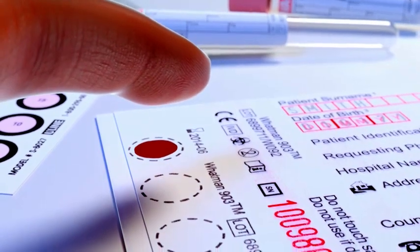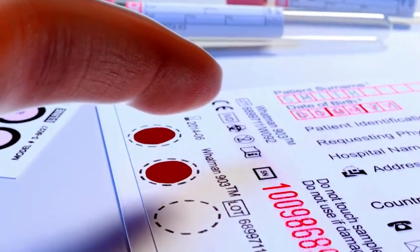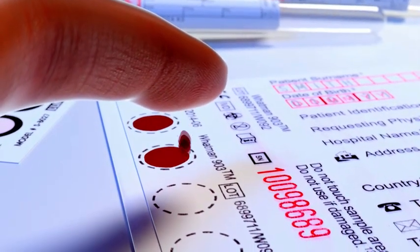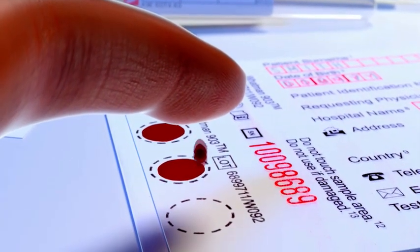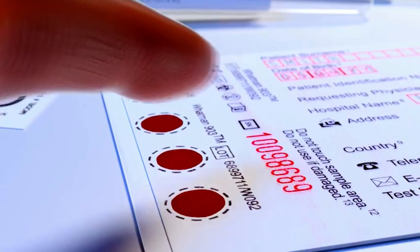The first uses a lancet to prick the side of the tip of the finger. Avoid taking samples from the fifth finger. One drop of blood should be applied per circle on the DBS card. The blood should cover the whole circle.